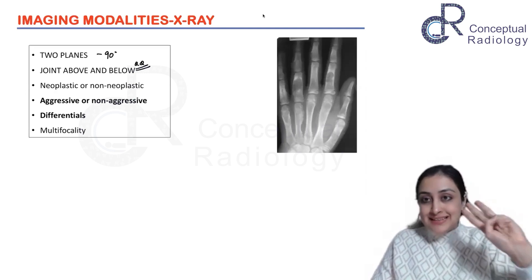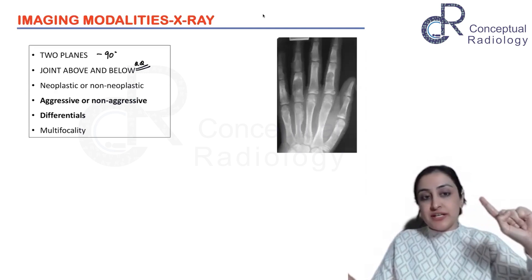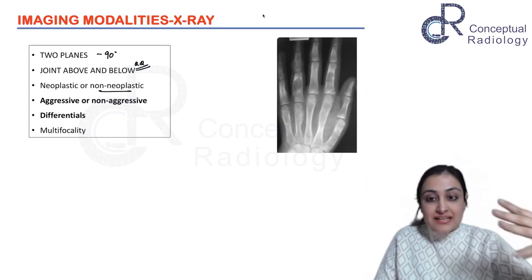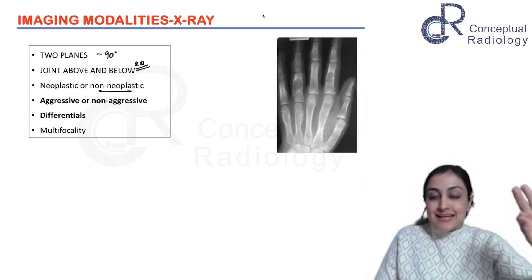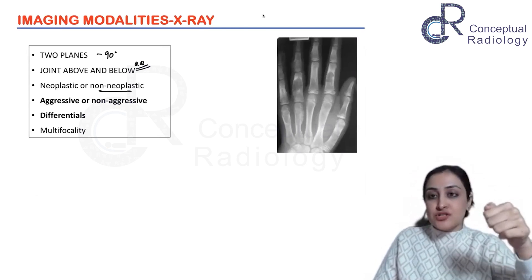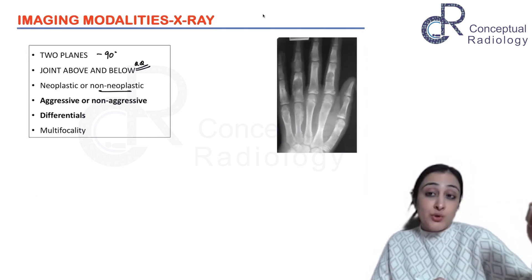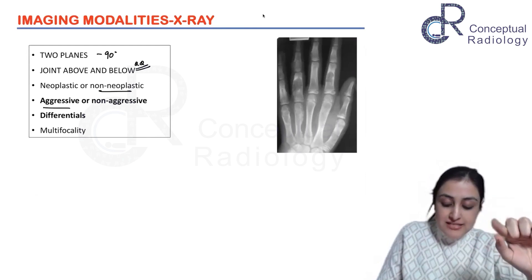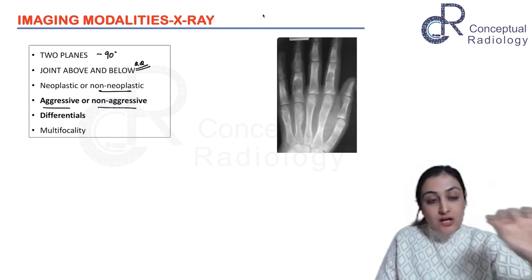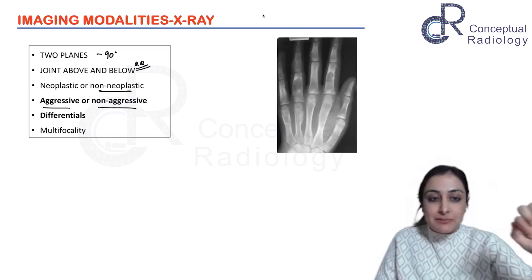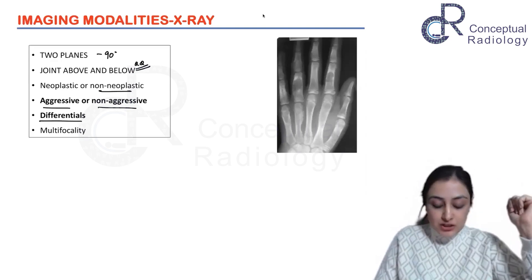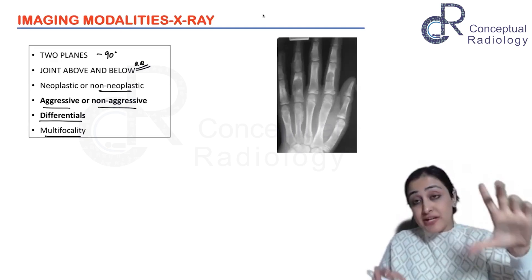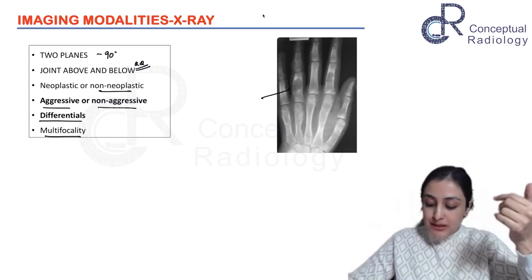The job of an X-ray is not to give you the diagnosis. There are three things you want to do: first, is it neoplastic or non-neoplastic (e.g., infection or infarct)? Second, never say benign or malignant — instead say aggressive or non-aggressive tumor in your impression. Third, if a multifocal lesion is suspected, scan with X-ray. For example, multiple lesions in the hand are very typical for multiple enchondromas.